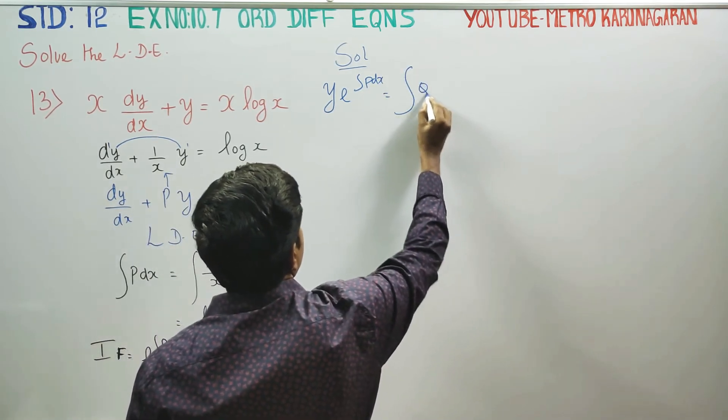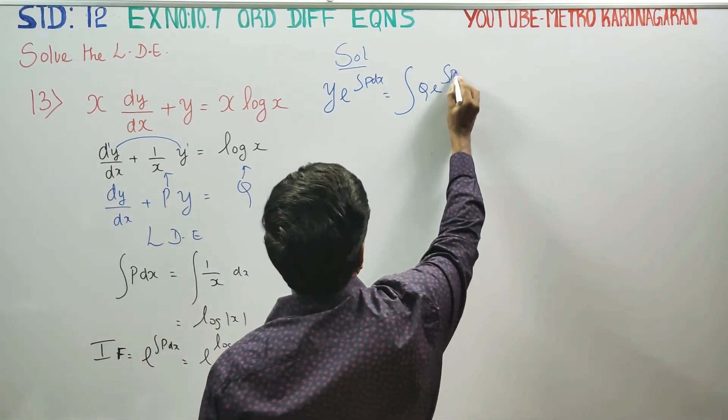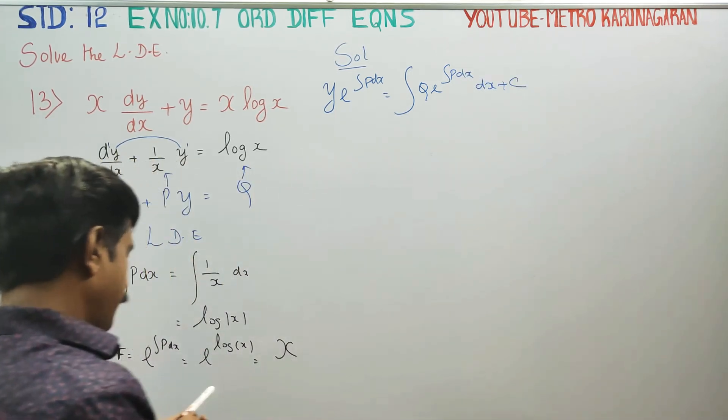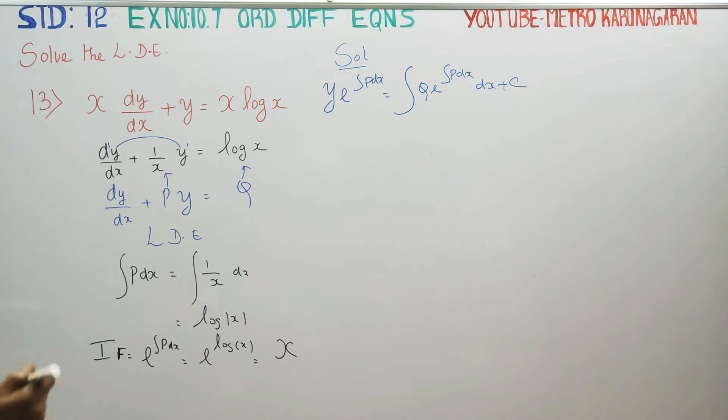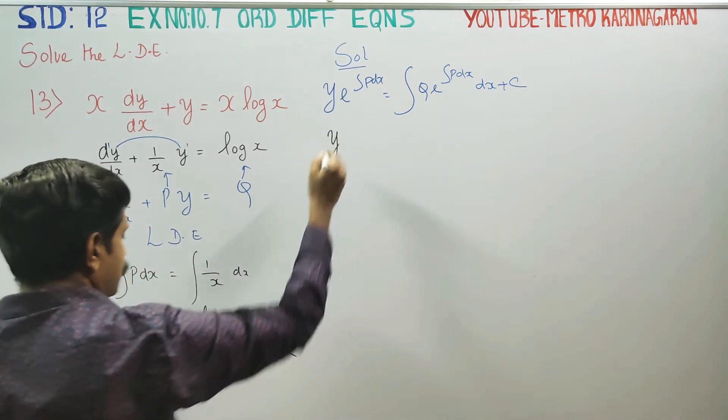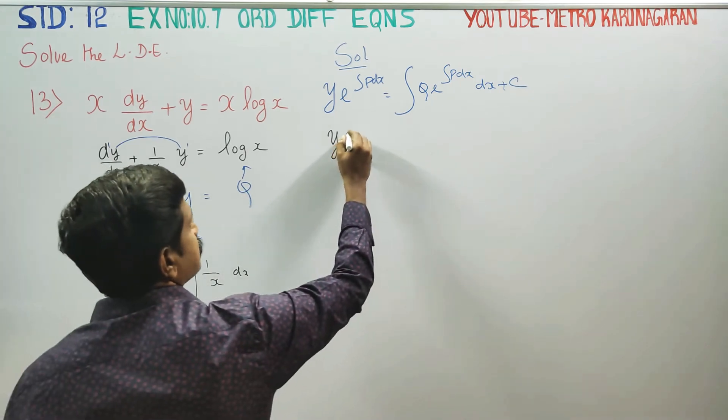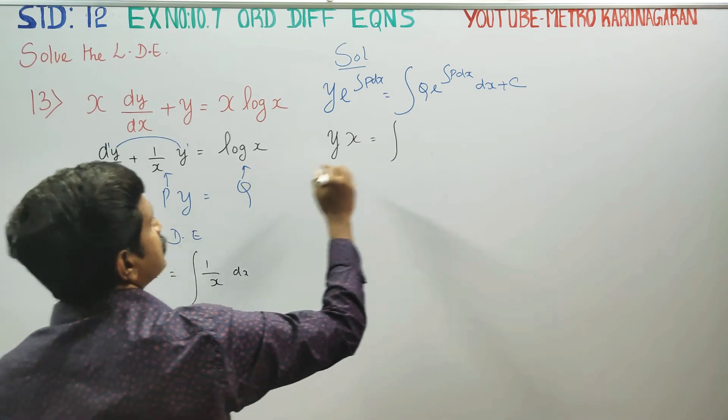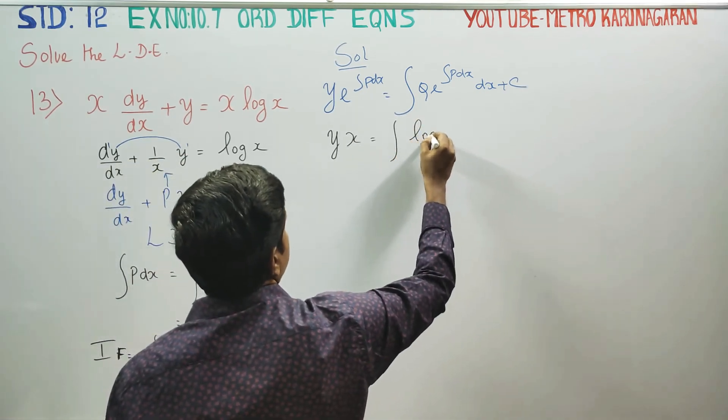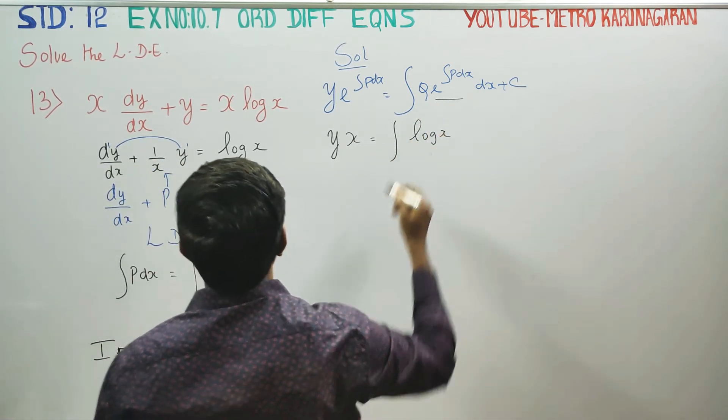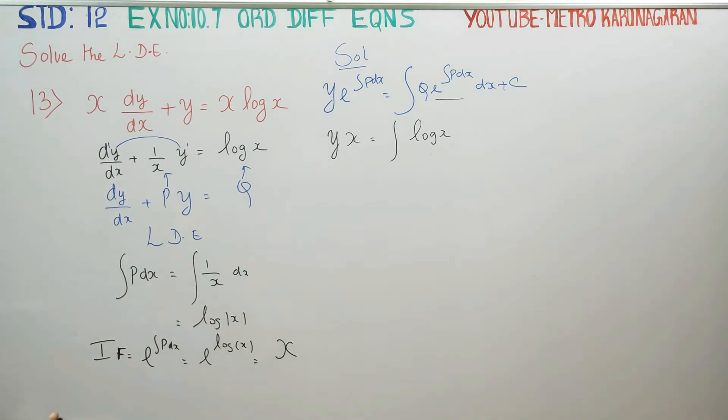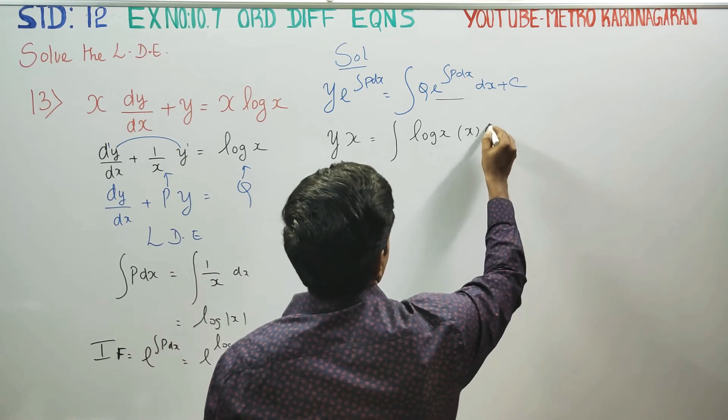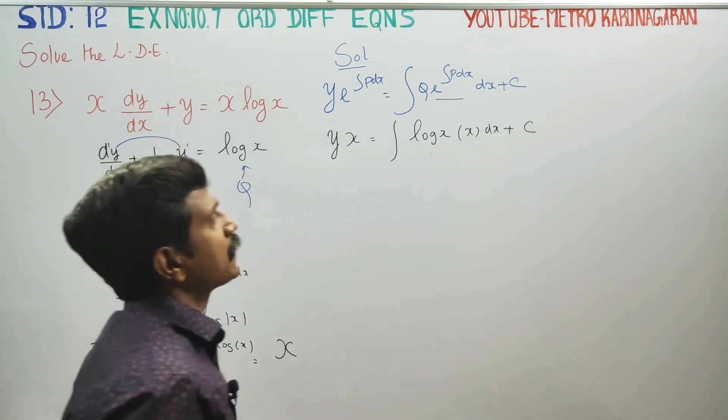The formula is: y times e to the power integral p dx equals integration of q times e to the power integral p dx dx plus c. If we substitute, yx equals integral of log x times x dx plus c.